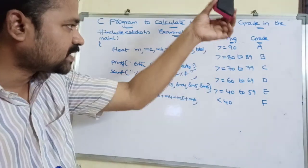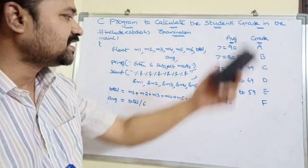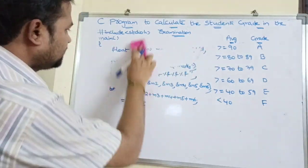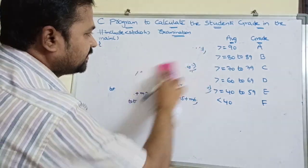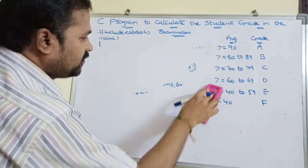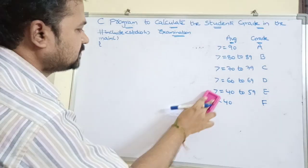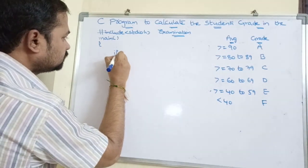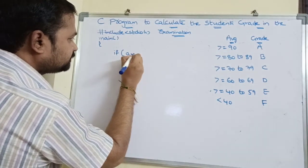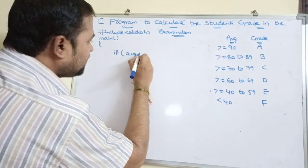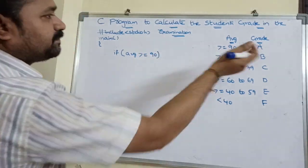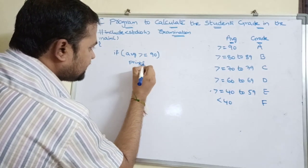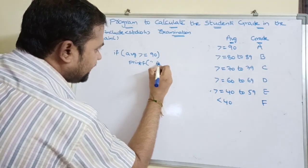Now let's write the else-if ladder based on these grade constraints. The first condition: if the average is greater than or equal to 90, then print grade A.